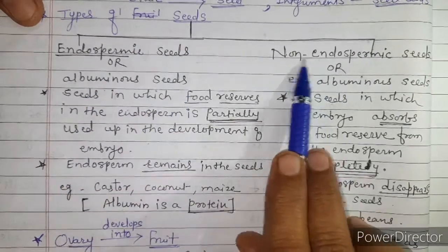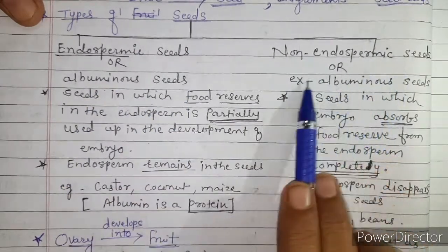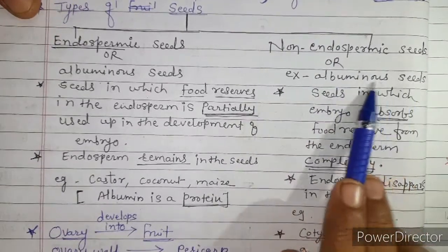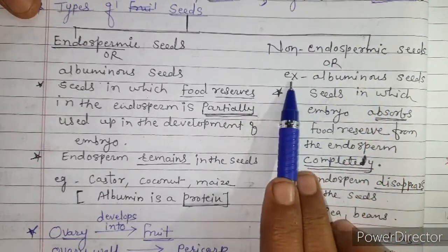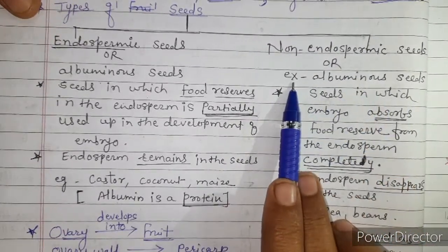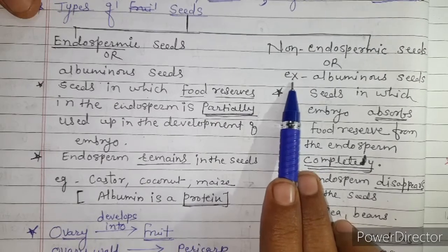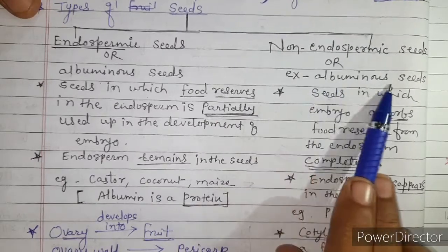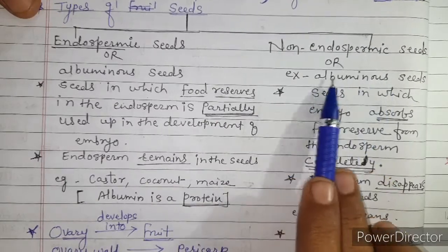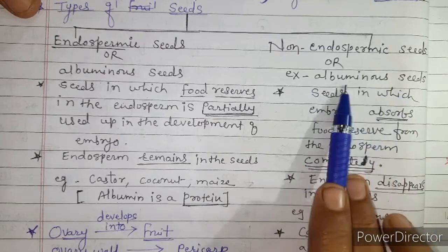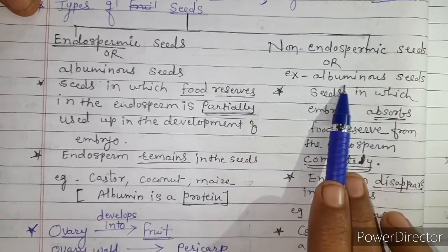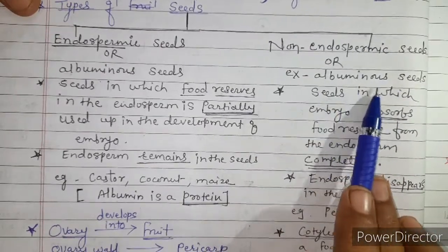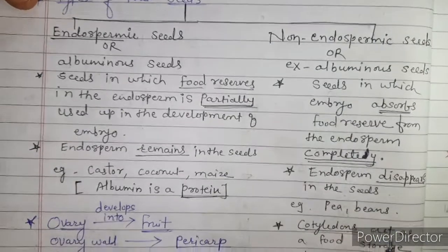Non-endospermic seeds are called exalbuminous seeds. The prefix 'ex' stands for the absence of albumin — no albumin, no food reserve. Such seeds are also called exalbuminous seeds.